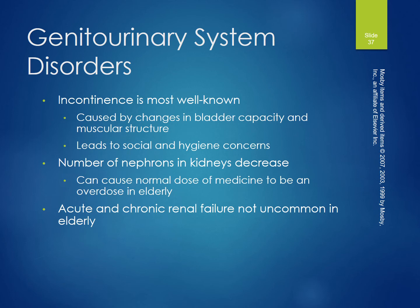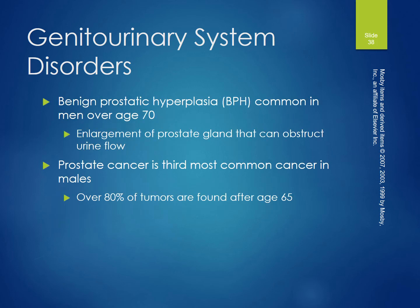Genitourinary disorders: incontinence is the most well known, caused by changes in bladder capacity and muscular structure, leading to social and hygiene concerns. The number of nephrons in the kidneys decreases, causing normal doses of medicine to be effectively overdosed in the elderly. Acute and chronic renal failure is uncommon in the elderly. Benign prostatic hyperplasia is common in men over 70 — enlargement of the prostate gland that can obstruct urine flow. Prostate cancer is the third most common cancer in males; over 80% of tumors are found after age 65.